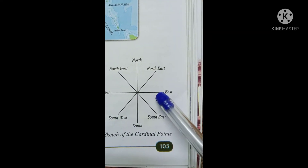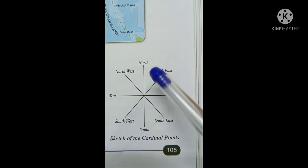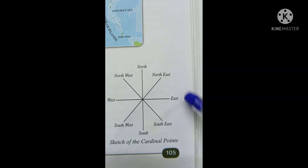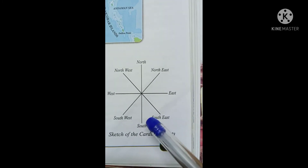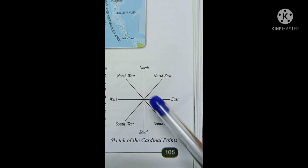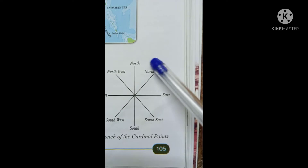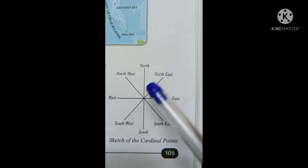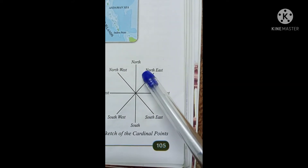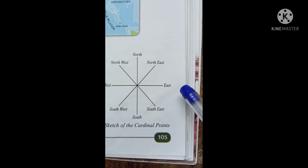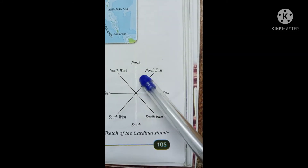We can also see the intermediate directions. The intermediate direction between north and east is north-east, between south and west is south-west, between north and west is north-west, and between south and east is south-east. With these directions we can understand maps.